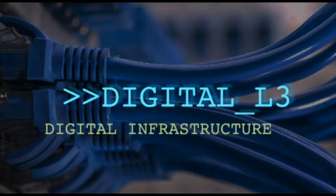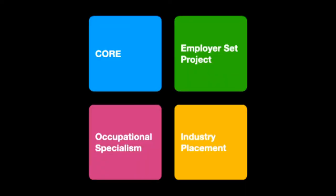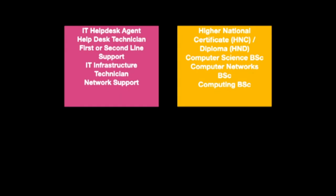The digital infrastructure route follows the same pattern as the digital production route, in that you have a core unit, employer set project and an occupational specialism. In terms of careers, you could progress into IT help desk — whether it be first or second line — IT support, IT infrastructure technician or a network support role.